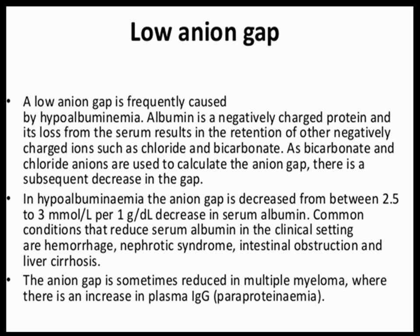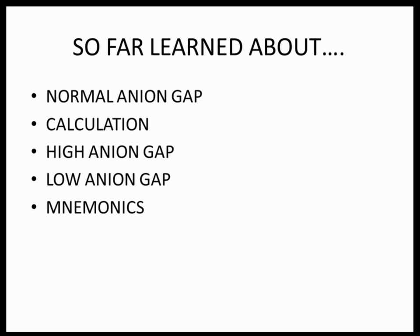Another cause of low anion gap is multiple myeloma, where there is an increase in cationic IgG. In this five-minute lecture, we covered the normal anion gap and its calculation, causes of high and low anion gap, albumin correction in metabolic acidosis with hypoalbuminemia, and the mnemonics. Next lesson we will learn about the strong ion difference.